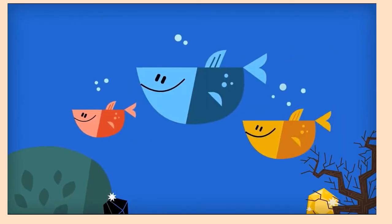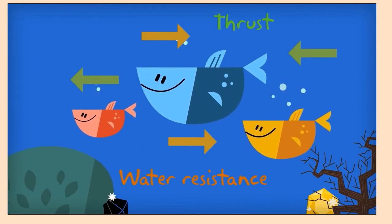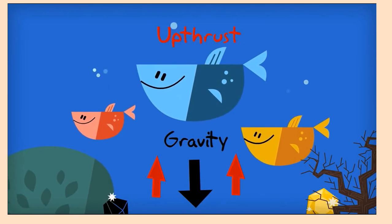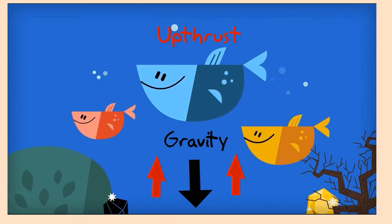As a fish swims forward, water resistance acts in the opposite direction. While gravity pulls the fish towards the bottom of the water, the upthrust exerts an upward force that counters gravity.